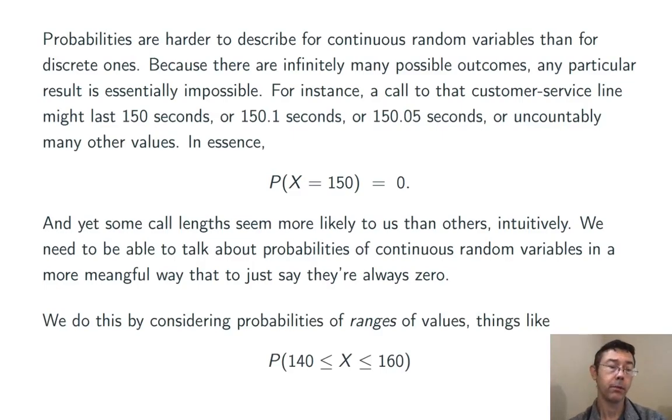We're going to get around the problem by considering only probabilities of ranges of values. We're going to look at things like the probability that that call is between 140 and 160 seconds. And probabilities like this will frequently be non-zero.